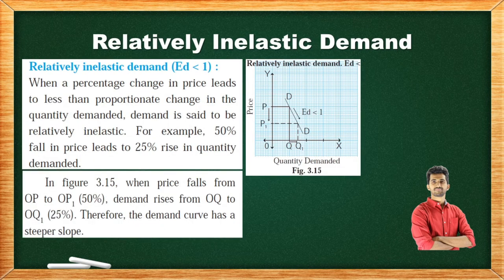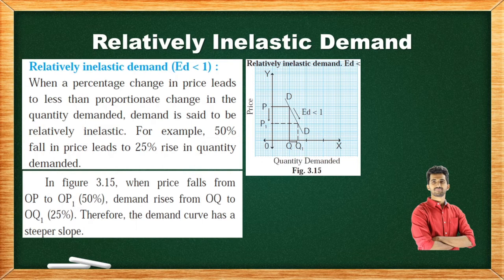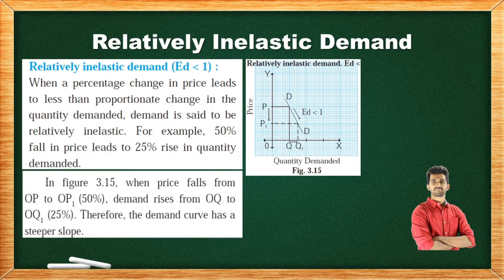Relatively Inelastic Demand — ED less than 1 — is exactly opposite to the previous type. When a percentage change in price leads to less than proportionate change in quantity demanded, demand is said to be relatively inelastic. For example, a 50% fall in price leads to only a 25% rise in quantity demanded. In figure 3.15, when price falls from OP to OP1, that is 50%, demand rises from OQ to OQ1, that is 25%. Therefore, the demand curve has a steeper slope.